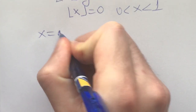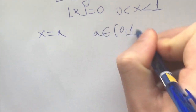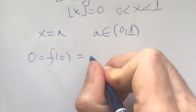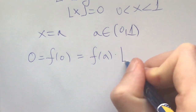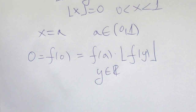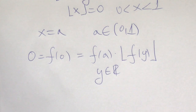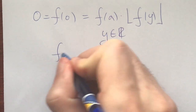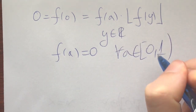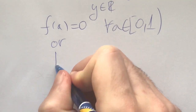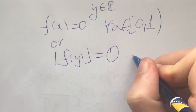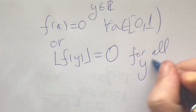If x equals a where a is between zero and one, we get f of zero equals zero equals f of a times the floor of f of y, where y can be any real number. This means either f of a is zero for all a between zero and one, or the floor of f of y equals zero for all real y.